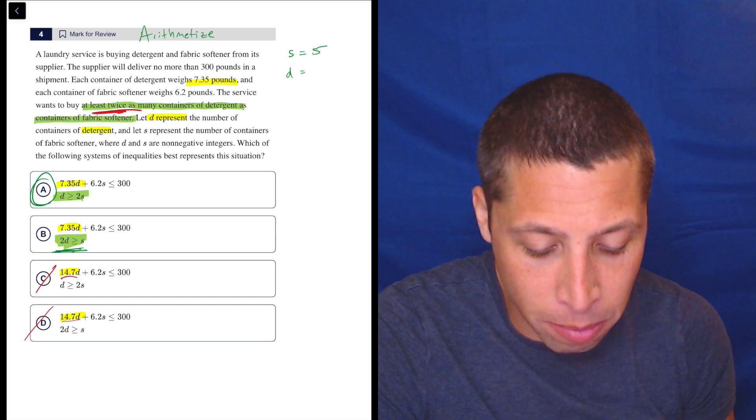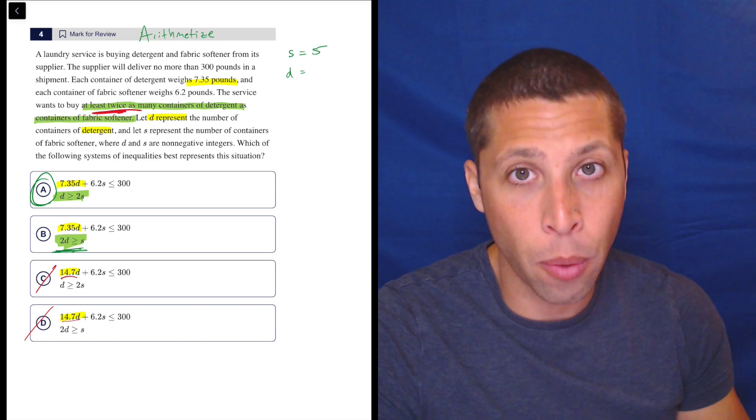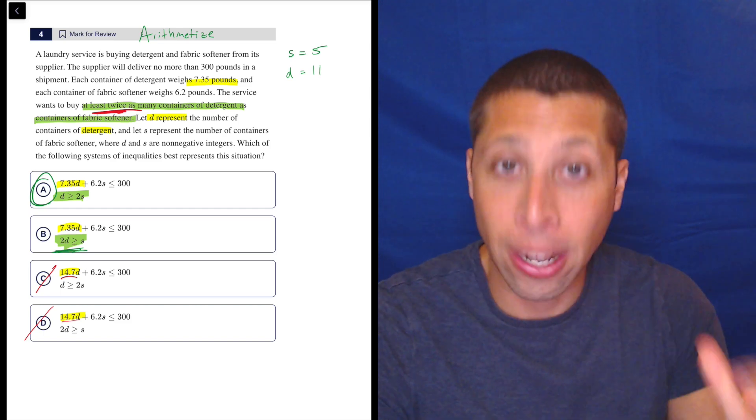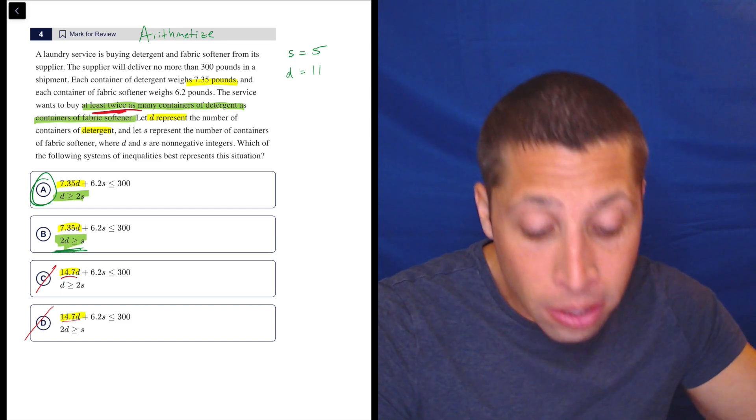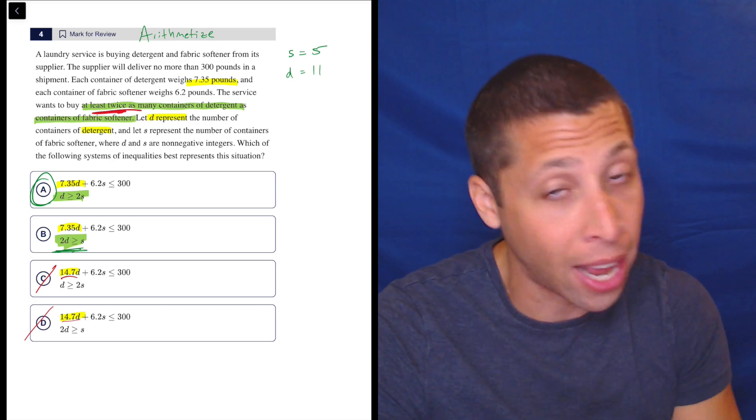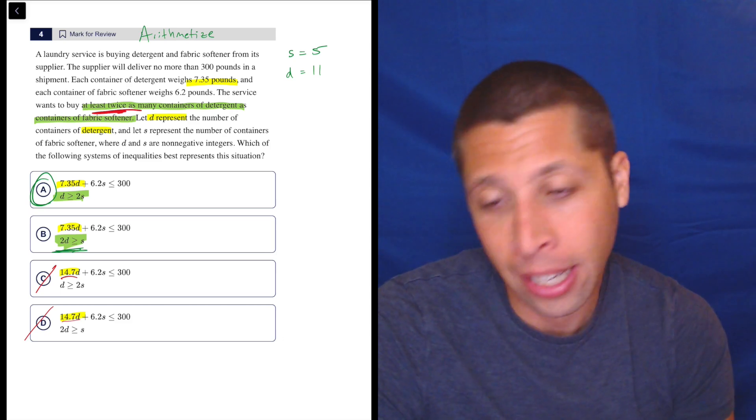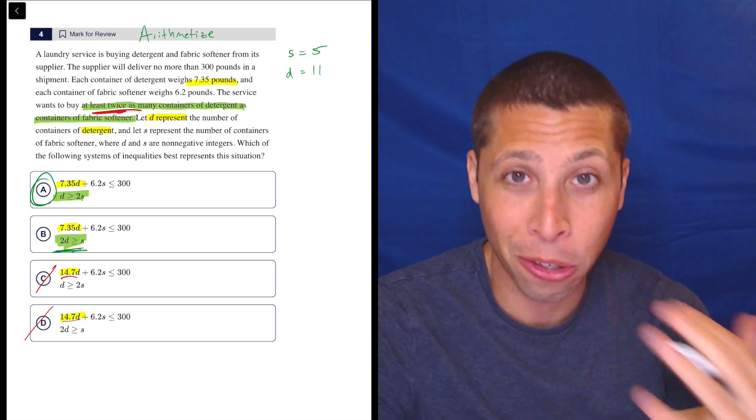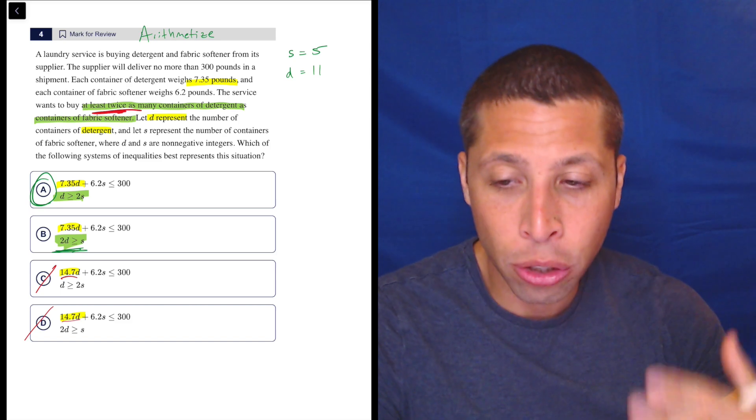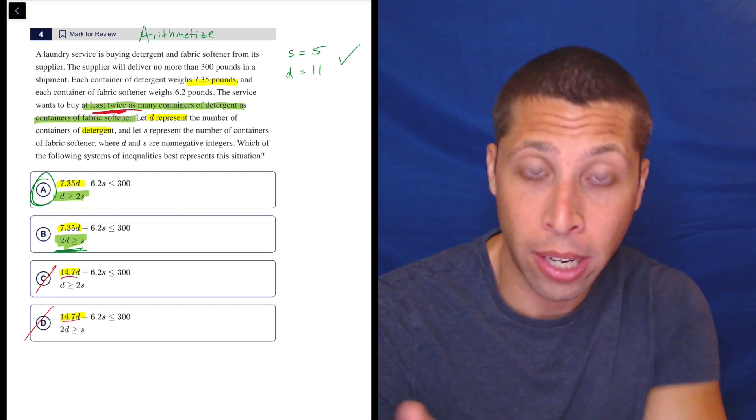And then we want to buy at least twice as many containers of detergent as containers of fabric softeners. So if we have five softeners, we might be like, okay, we want it twice as much, so that's 10, but at least twice as much, so let's go to 11. Let's go a little higher and that should work. 11 detergent is at least twice as much softener. Hopefully that part makes sense because now that we got numbers, if you don't understand that, I don't know how to help you. Now, why did I pick five? It's just a random number to help me understand it in some way that's concrete, but also, like I said, my S's look like five. So at least it makes it easier that way.